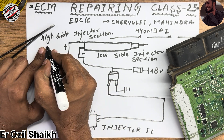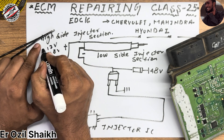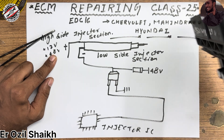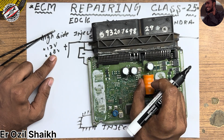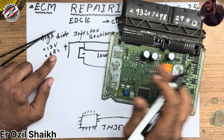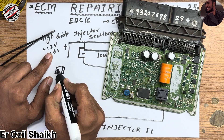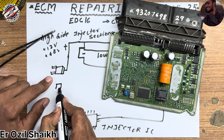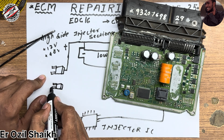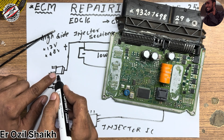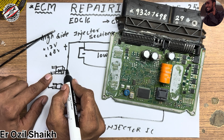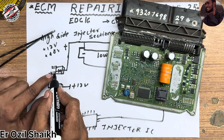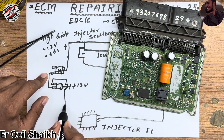The high side injector section carries two voltages: one is 12 volts and another is 48 volts — this is the plus voltage. Here you can see two MOSFETs and a diode. This diode is connected to the injector. We have one more N-channel MOSFET whose anode side connects to a diode, and one side of the MOSFET carries 12 volts while the other side connects to this diode.